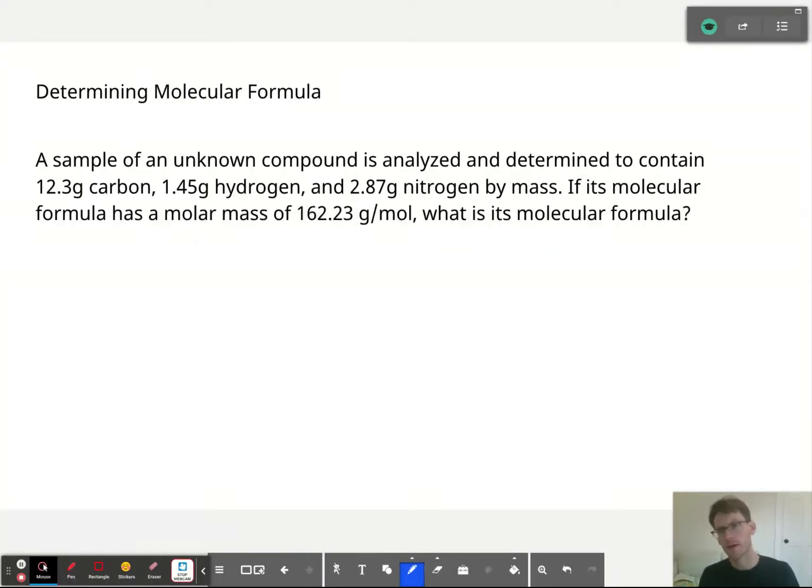So how about molecular formula? Let's take exactly the same problem. We have the same amount of carbon, hydrogen, nitrogen. So we know that the empirical formula is C5H7N. But we know that the molecular formula of the compound has a molar mass of 162.23 grams per mole. Well, let's add everything up. Let's find the molar mass of our empirical formula.